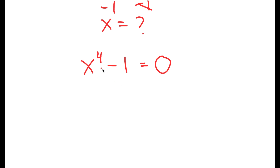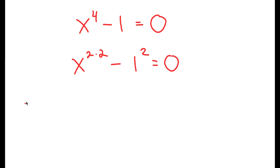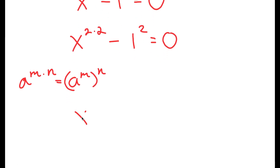From here, I'm going to rewrite this as x to the power of 2 times 2 minus 1 to the power of 2 is equal to 0. The reason I did this is because now I can use the property a to the power of m times n is equal to a to the power of m to the power of n. So in this case, x to the power of 2 times 2 is equal to x to the power of 2 to the power of 2. So I have x to the power of 2 to the power of 2 minus 1 to the power of 2 is equal to 0.